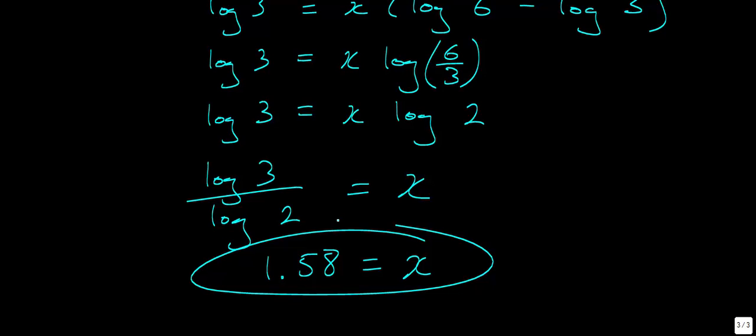Normally with these exponential equations we try to identify a common base, as we did for parts a and b. If there's no common base, we take the common log of each side, as in part c. That concludes this lesson on solving logarithmic and exponential equations.